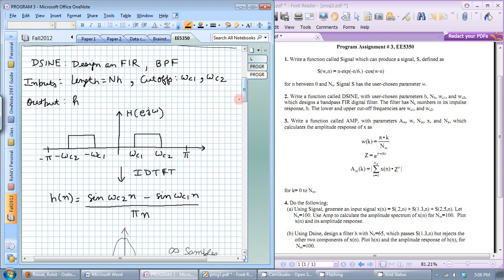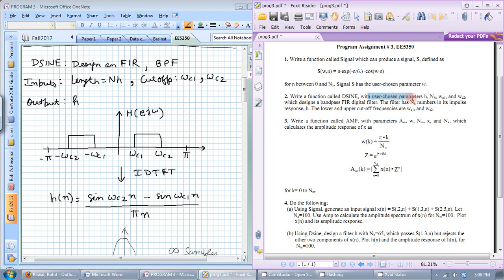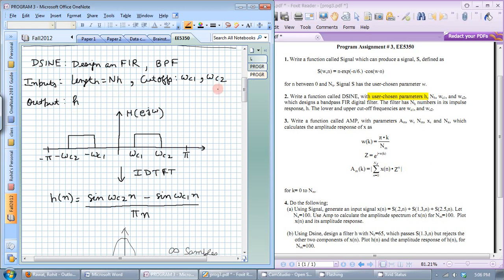The next part is to design an FIR bandpass filter. The problem incorrectly says that user chosen parameters H because H is not actually the input. H is supposed to be the output. The inputs to the function would be the length of the filter, nH, and the cutoffs, omega C1 and omega C2. Looking at it in frequency domain, a bandpass filter would look like this. The lower cutoff, the upper cutoff, magnitude of 1.